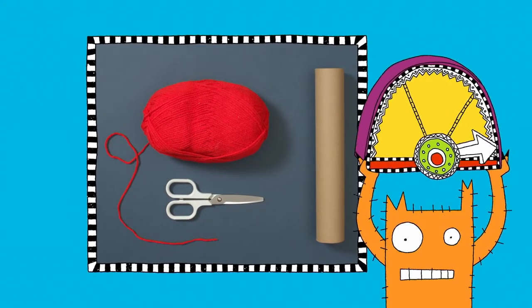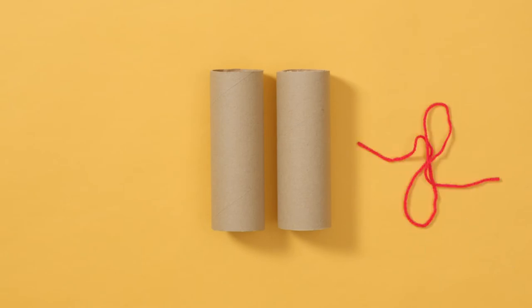Got all that? Let's get making. Take your cardboard tube and cut it in half so you have two smaller tubes like this. Snip off a length of wool and tie the tubes together.